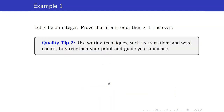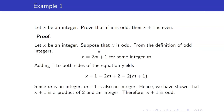Here is a tip: use writing techniques such as transitions and word choice to strengthen your proof and guide your audience. For example, I used the transition word 'hence' to connect intermediate steps, and 'therefore' to signal the conclusion. I also used guiding language such as 'we have shown that x plus 1 is a product of 2 and an integer' to help the reader follow the argument.